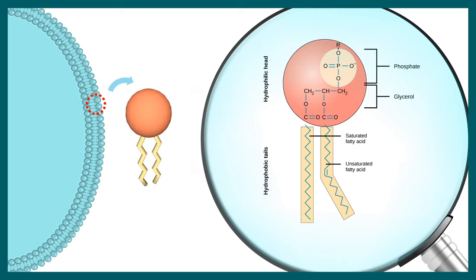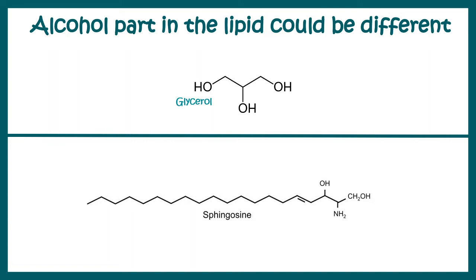But in the case of sphingolipids, the biggest difference is that the alcohol part is sphingosine and not glycerol. This is the major difference between a phospholipid and a sphingolipid.